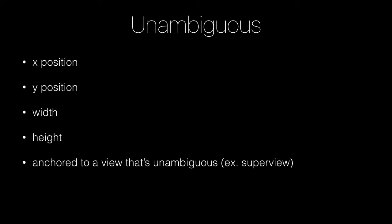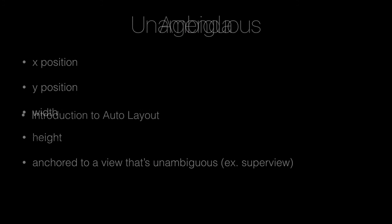To recap, in order to have an unambiguous constraint, we will have to tell AutoLayout the X position, the Y position, the width, and the height of a view or UI element. And this constraint has to be anchored to a view that is unambiguous. For example, the super view is always unambiguous — the super view in this case is the main view, the root view of this view controller. So that's that for an introduction to AutoLayout.